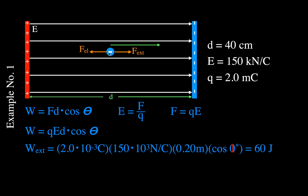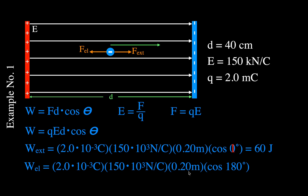Now what about the work done by the electric field? Even though we're moving the charge to the right, the electric field force still points to the left — the opposite direction. The charge, field strength, and distance are the same, but the displacement vector and the electric field force vector are antiparallel, so the angle between them is 180 degrees, and cosine of 180 degrees is minus 1.